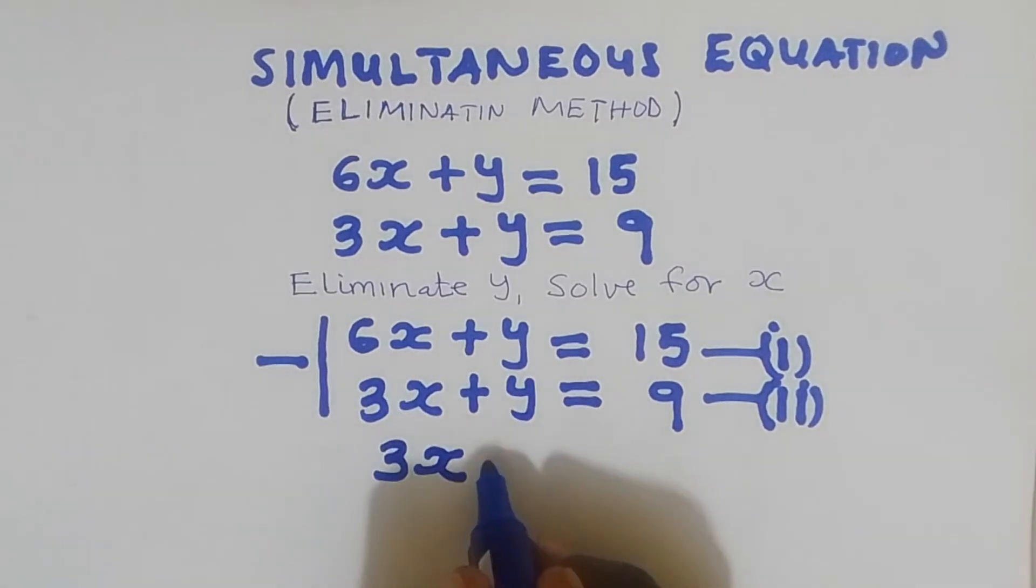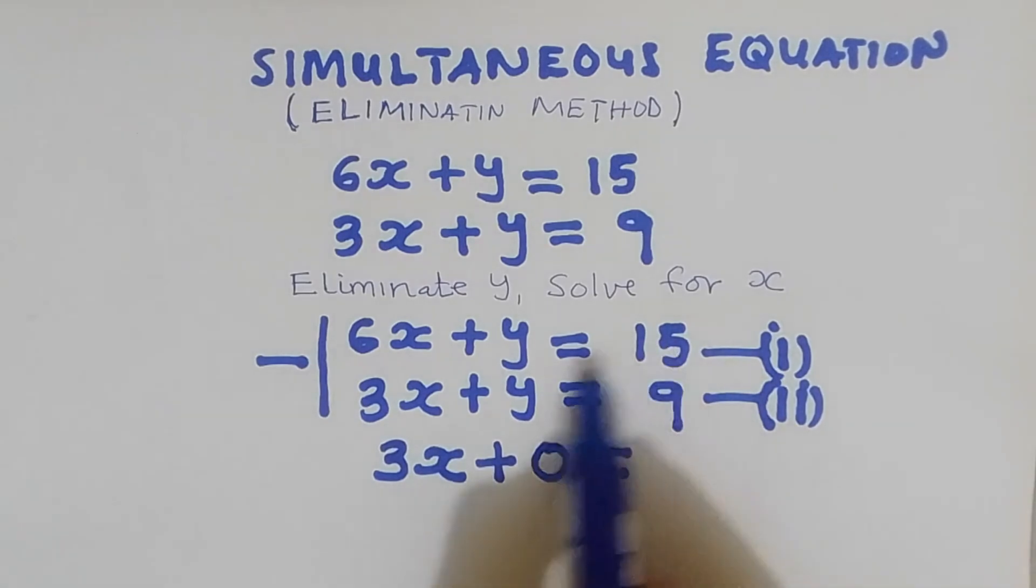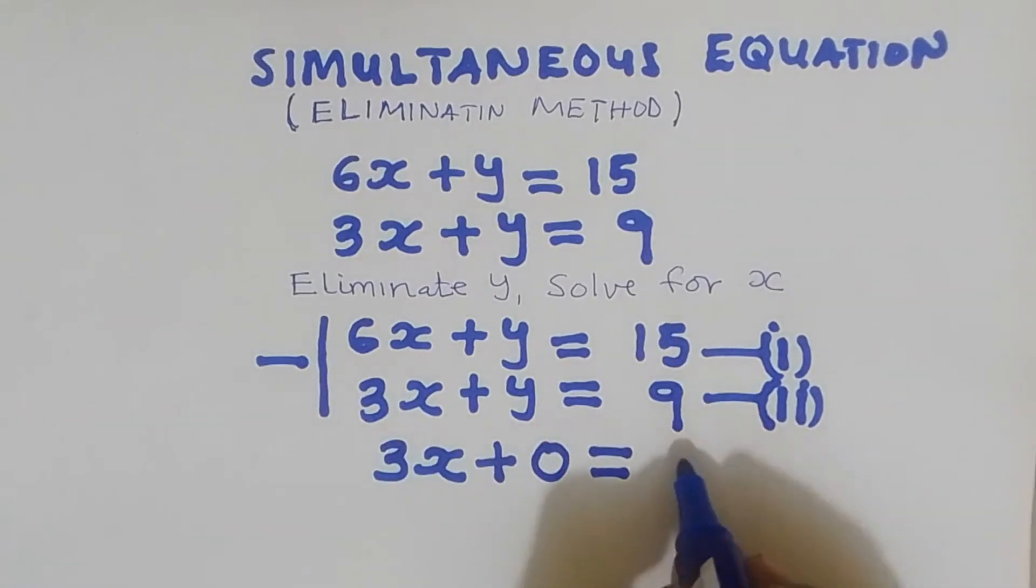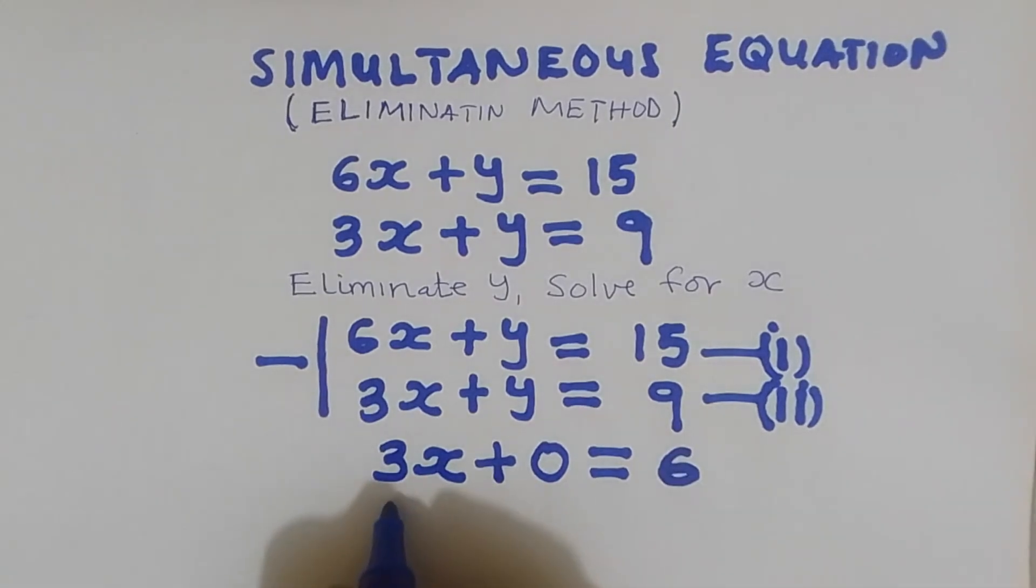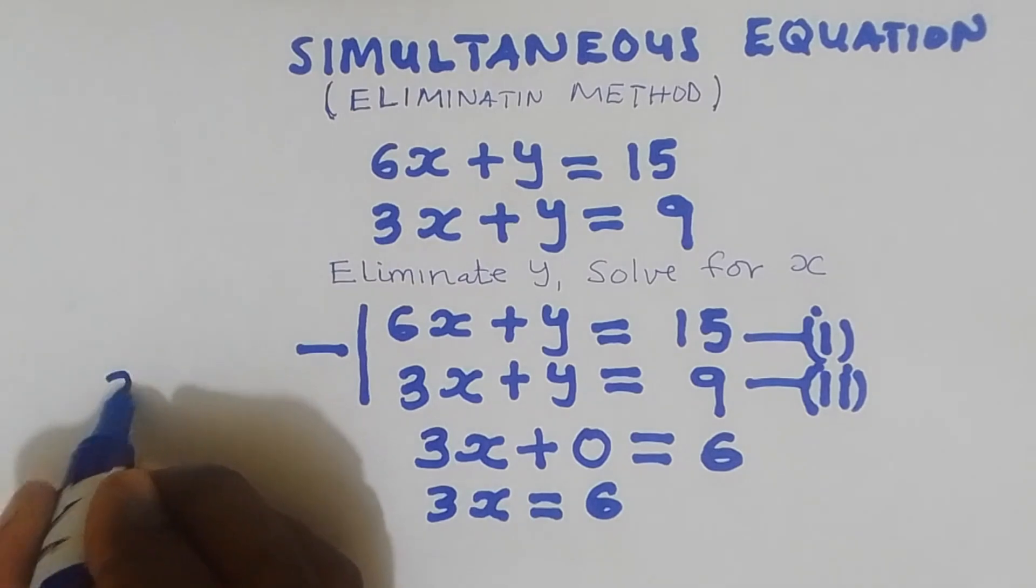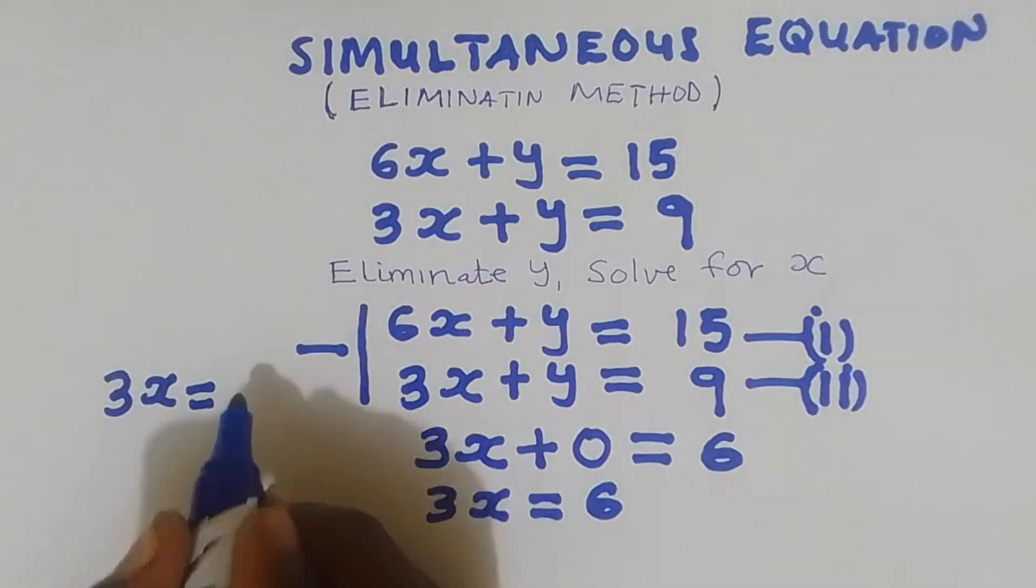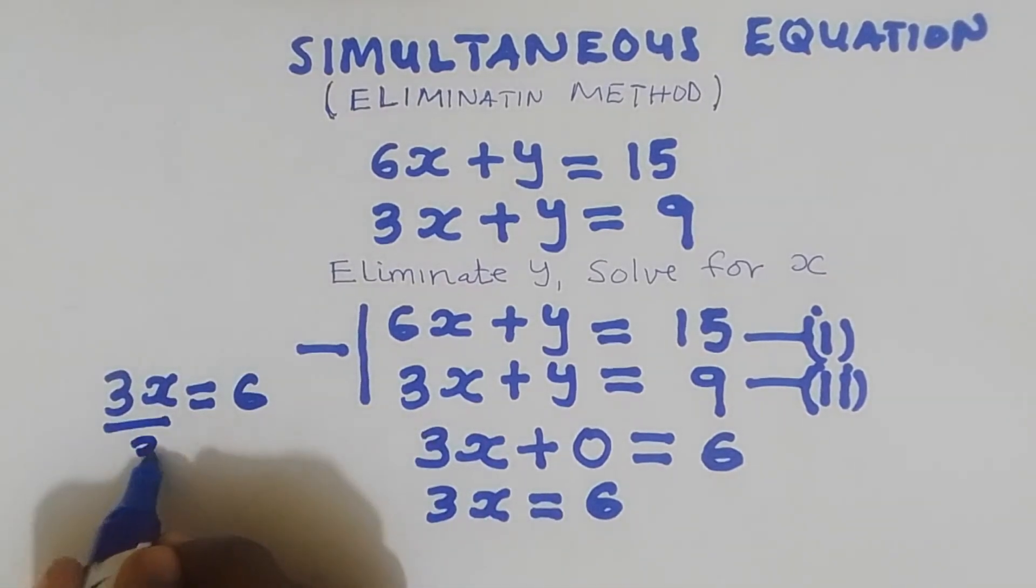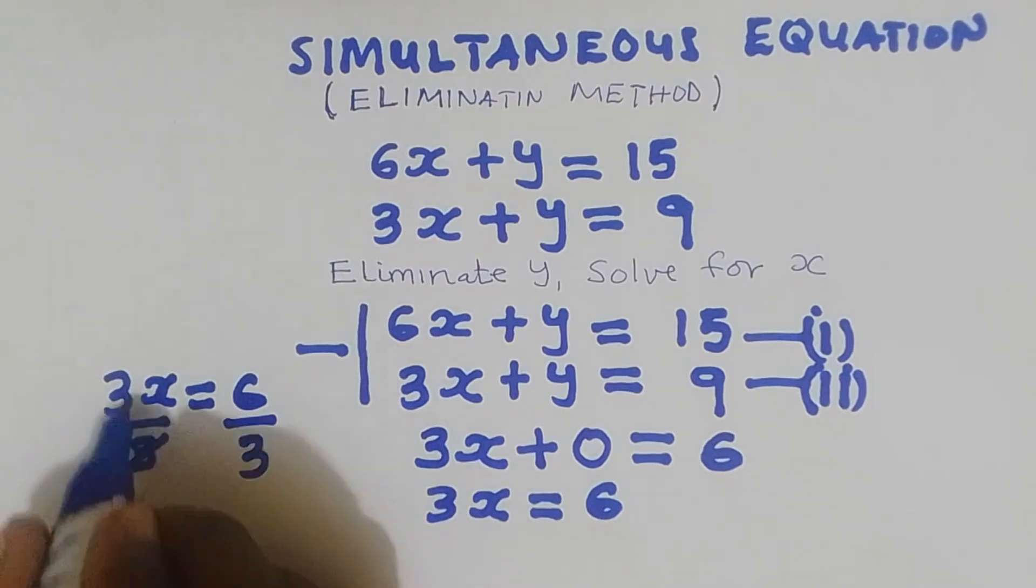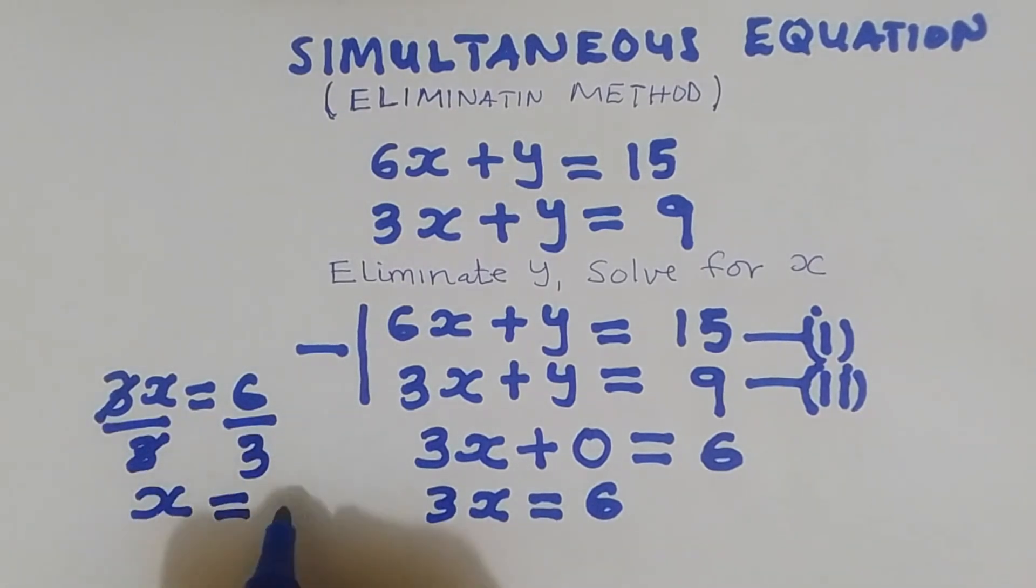minus y I'm going to get 0. This is equal to 15 take away 9, I'll get 6. Now 3x is equal to 6. I'll divide by 3, I'm going to get x is equal to 2.